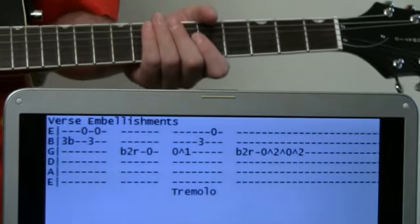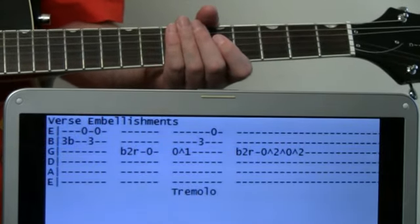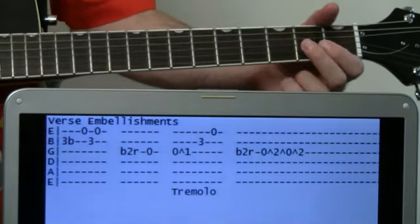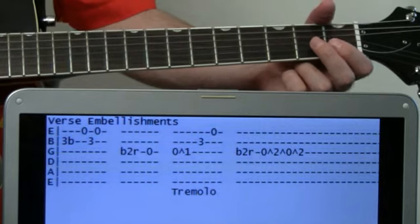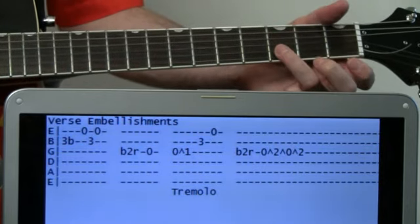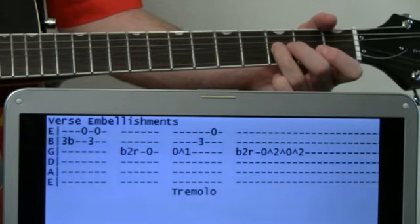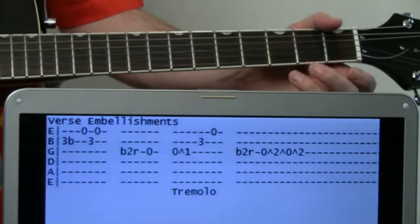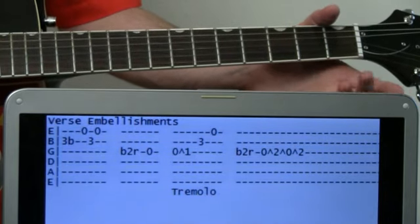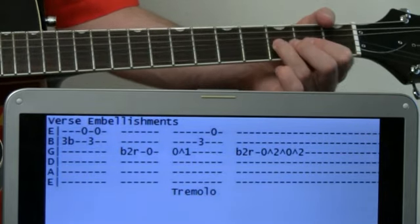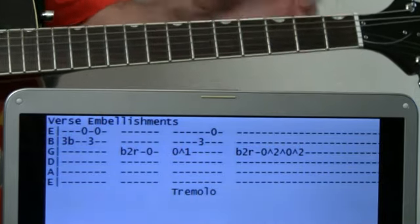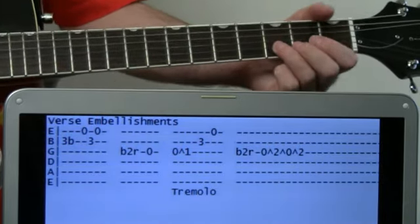Alright, and there are also some light guitar embellishments going on throughout the verse. So you'll hear a little bit of something like this, where you just bend the three on the B and then hit the open E, and then three on the B and then open E, and just kind of lightly placed in there throughout the riff or the verse.